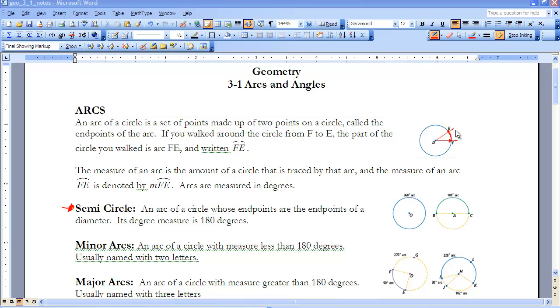First of all, let's define what it is to be an arc. If you look at this circle here, we have points on the circle that are F and E. And if we take a walk between those two, F and E, that becomes our arc.